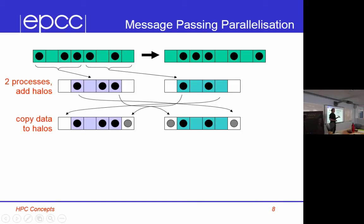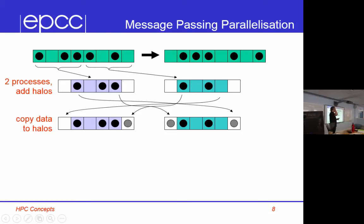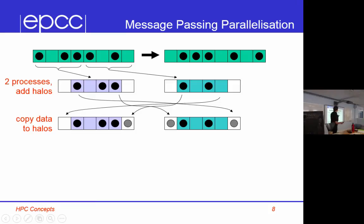Each process runs the serial code — instead of n cells, it has n over p, where p is the number of processes. By having the boundaries explicit, the serial code is almost identical to the parallel code: update the boundaries, update the cells. In the serial code, updating boundaries is a copy; in the parallel code, it involves communication. But once you've done that, the code is the same. If you set the problem up correctly, you can separate it into clear communication and calculation phases that look very similar.